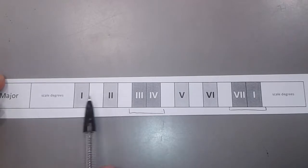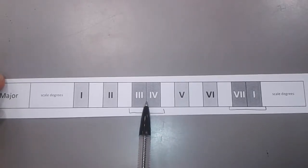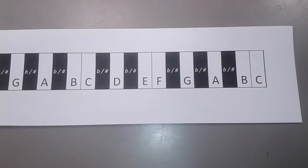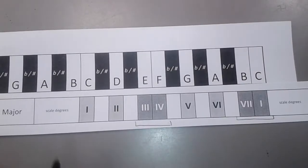And if you forget tone, tone, semitone, tone, tone, tone, semitone, then write out the piano keyboard first, and on a separate piece of paper, put in the one, two, three, four, five, six, seven with the white notes, because C major, of course, is only white notes, and that is your pattern.